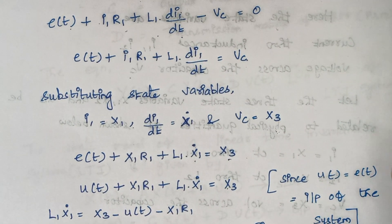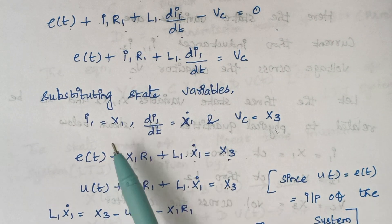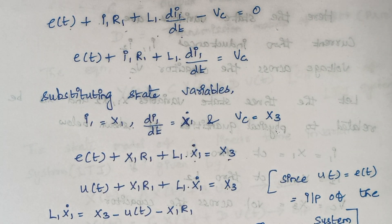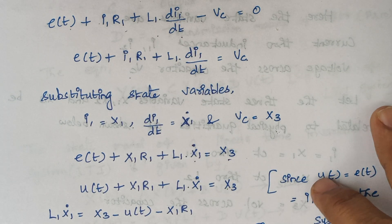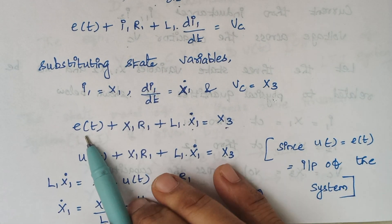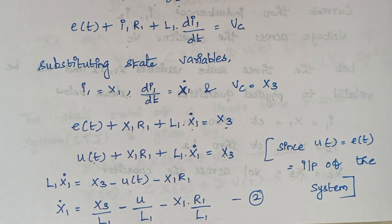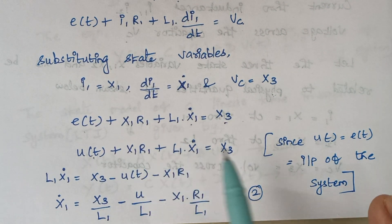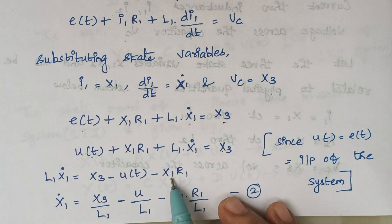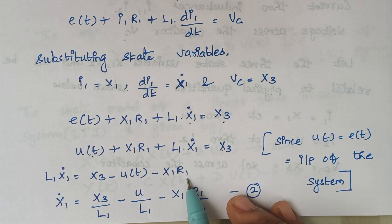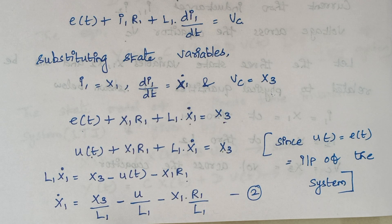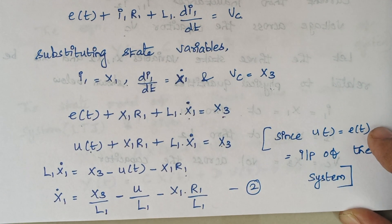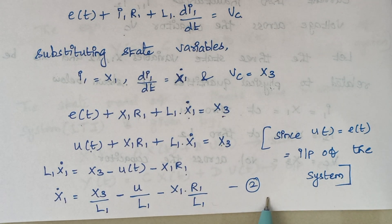E(t) is replaced with U(t) because in state model representation U(t) is the input. Rearranging the expression, moving terms to the right-hand side gives: L1·X1_dot = −X1·R1 + X3 − U(t). Moving L1 to the right-hand side, we finally get: X1_dot = (−R1/L1)·X1 + (1/L1)·X3 − (1/L1)·U(t). This is equation 1.